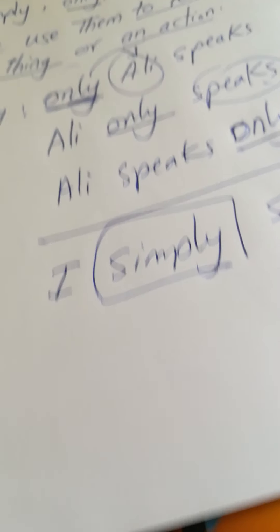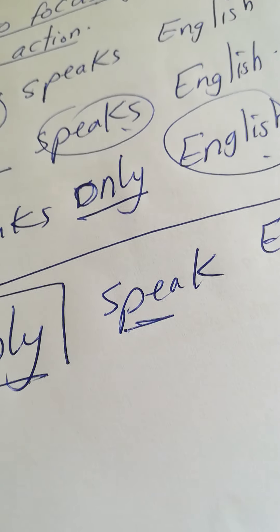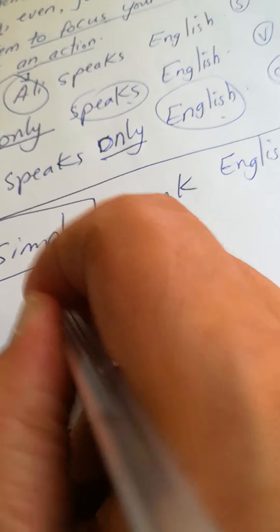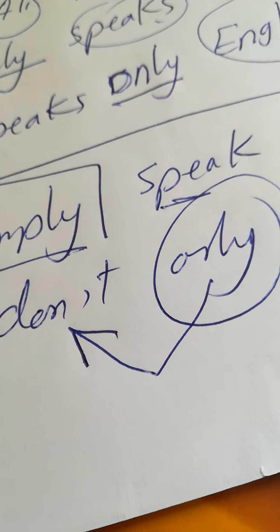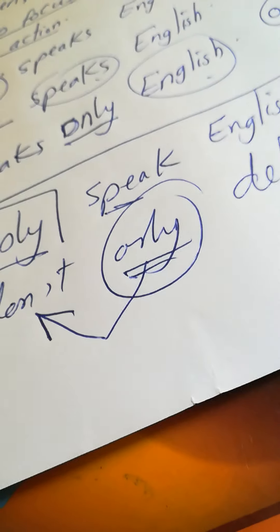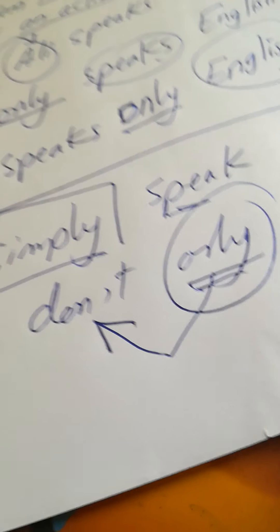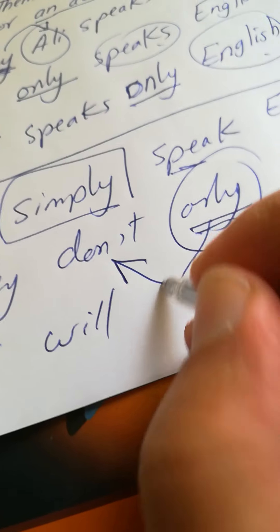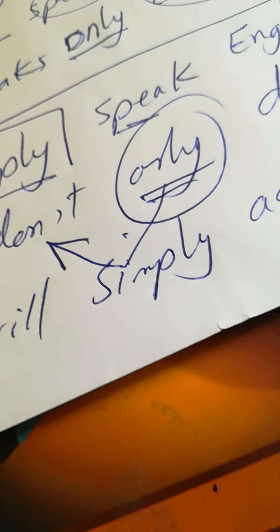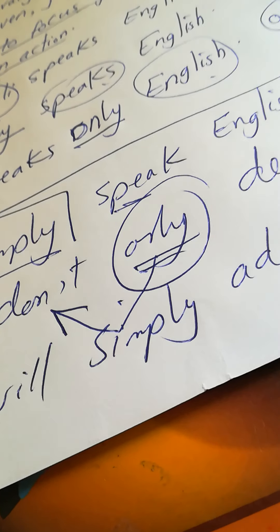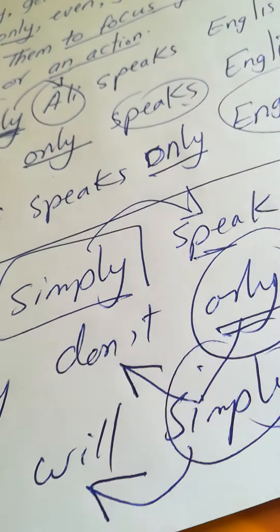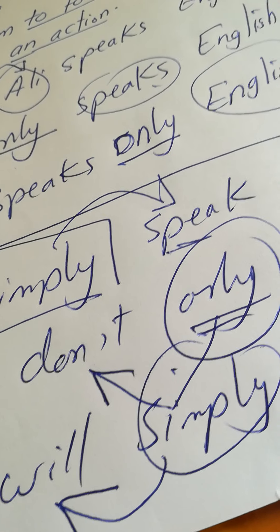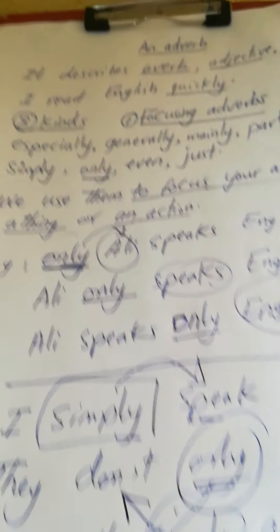But when we have a helping verb, we place the focusing adverb after the helping verb. For example: 'They don't only deliver' — here 'only' comes after the helping verb 'don't.' Another example: 'I will simply adapt to be a doctor' — here 'simply' comes after the helping verb 'will' and before the main verb 'adapt.' Thank you very much. Goodbye.